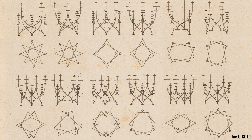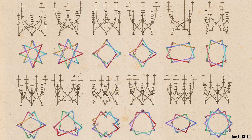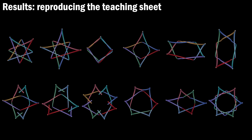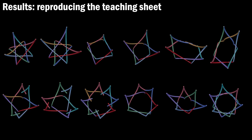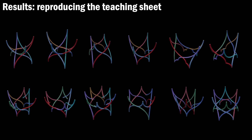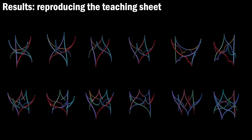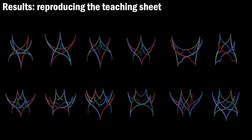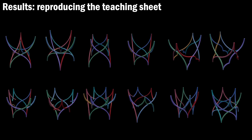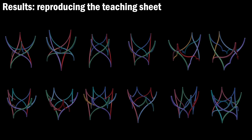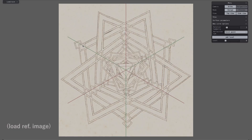Based on these observations, we formulate positional and tangential constraints to compute the 3D curved networks in the main structure of Gothic microarchitecture. Here we show the reconstruction results for each example shown in the teaching sheet. Our formulation is simple yet effective, allowing for interactive modeling.